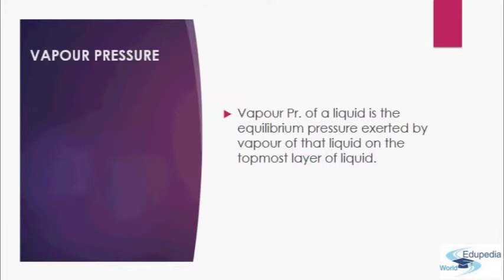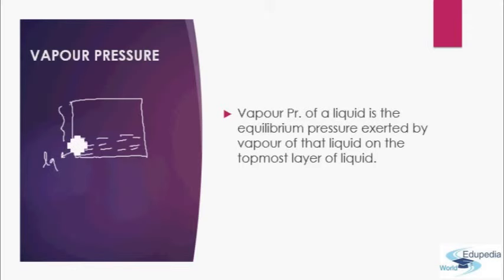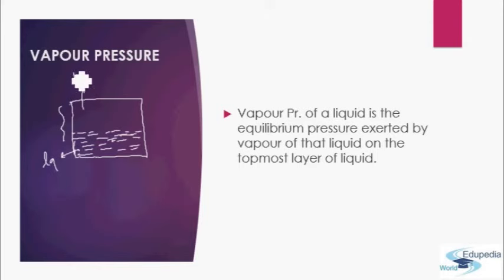So what is vapor pressure? It is simply the equilibrium pressure exerted by the vapor of a liquid on the topmost layer of a liquid. Let's say I have a container — initially it is a vacuum — and now I pour some liquid inside. There is only liquid in the lower half and nothing in the upper half. We assume the pressure in the upper half is zero, but after some time we do happen to measure a value of pressure there. This pressure is a result of evaporation of the liquid molecules.